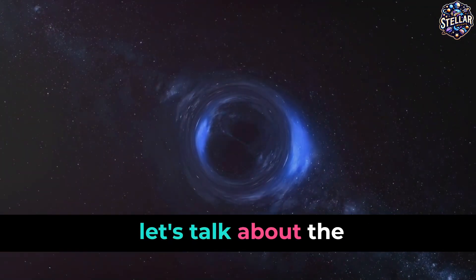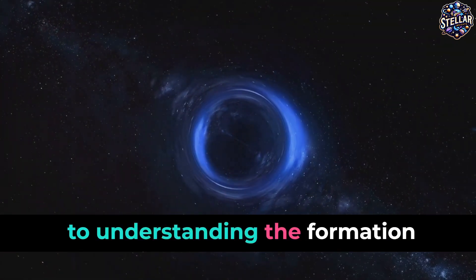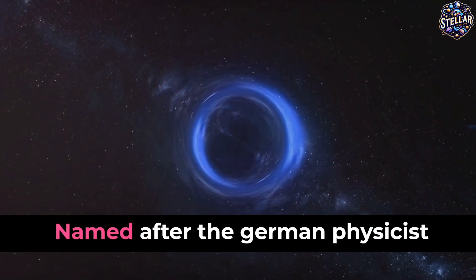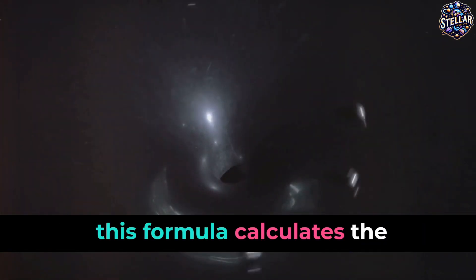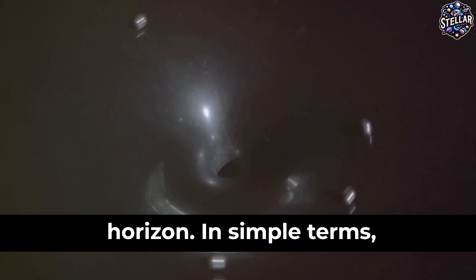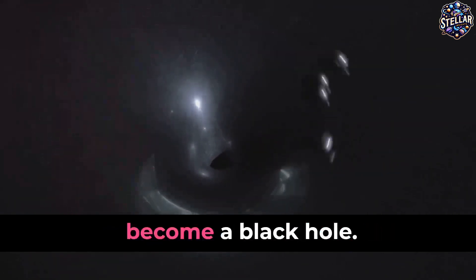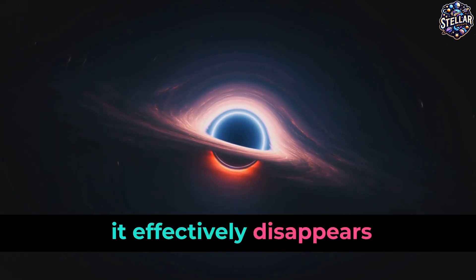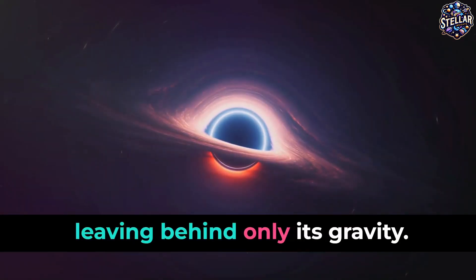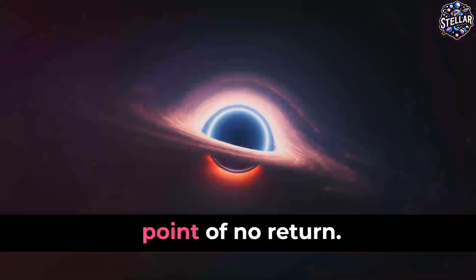Now, let's talk about the Schwarzschild radius. This is a concept that's crucial to understanding the formation of black holes. Named after the German physicist Karl Schwarzschild, this formula calculates the radius of a black hole's event horizon. In simple terms, the Schwarzschild radius is the size a celestial body must be compressed to in order to become a black hole. Once a star is compressed beyond this limit, it effectively disappears from the universe, leaving behind only its gravity. So you can think of the Schwarzschild radius as the point of no return.